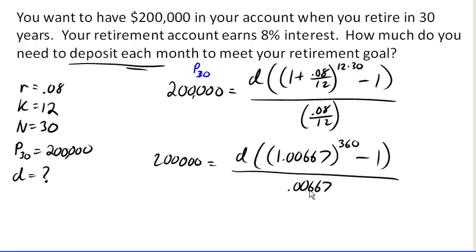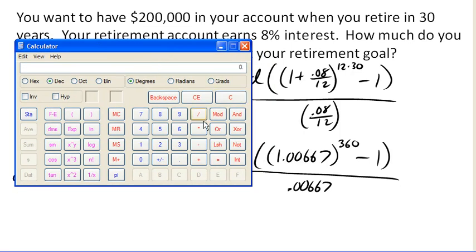Now I can pull out my calculator and say, let's see if we can figure out what this part is. So I'm going to take 1.00667, raise it to the power of 360. And now I need to subtract 1 from that. So minus 1 gives me 9.948. Now I can write that down if I want, but as long as it's in my calculator, I might as well go ahead and divide it by the 0.0067. So let's go ahead and divide that by 0.00667. Gives me 1491.57.